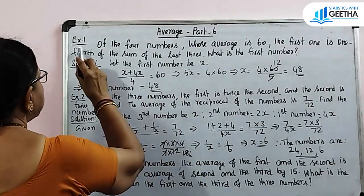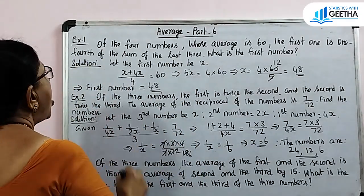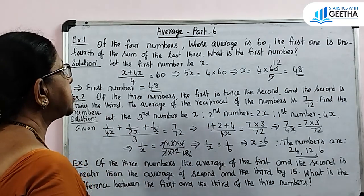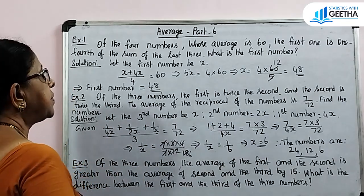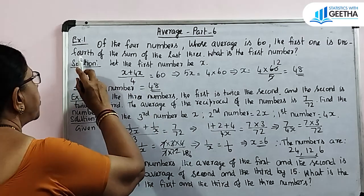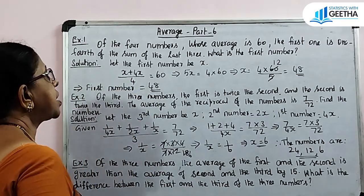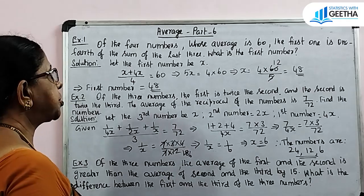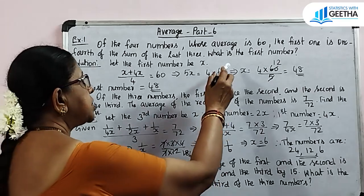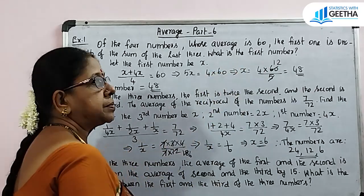Exercise number 1: Of the 4 numbers whose average is 60, the first one is one-fourth of the sum of the last 3. What is the first number?